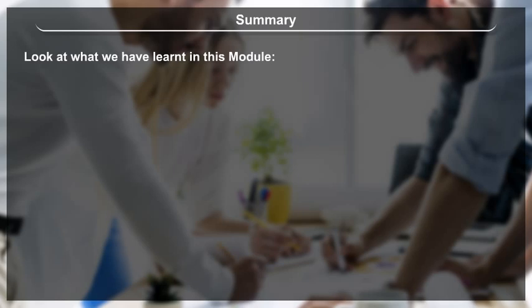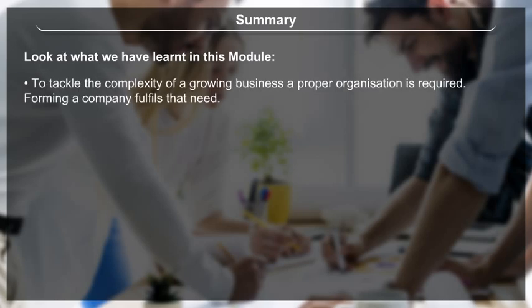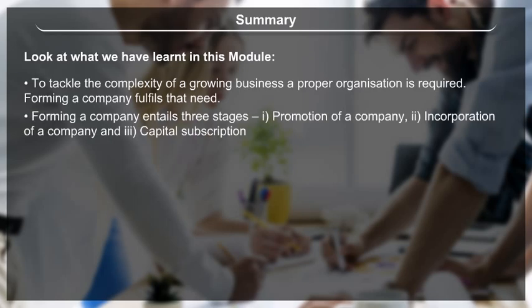Summary: To tackle the complexity of a growing business, a proper organization is required, and forming a company fulfills that need. Forming a company entails three stages: 1. Promotion of a company, 2. Incorporation of a company, 3. Capital subscription.